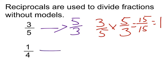1 fourth, the reciprocal of 1 fourth would be 4 over 1. And again, 1 fourth times 4 over 1 is the same as 4 fourths, which equals 1.